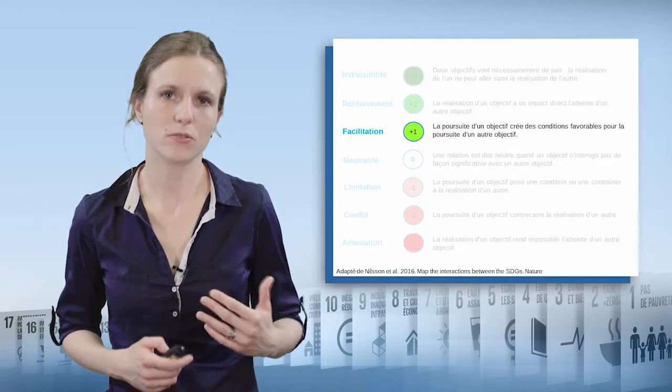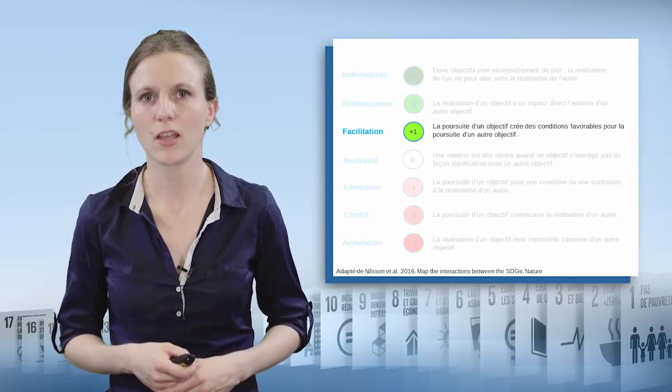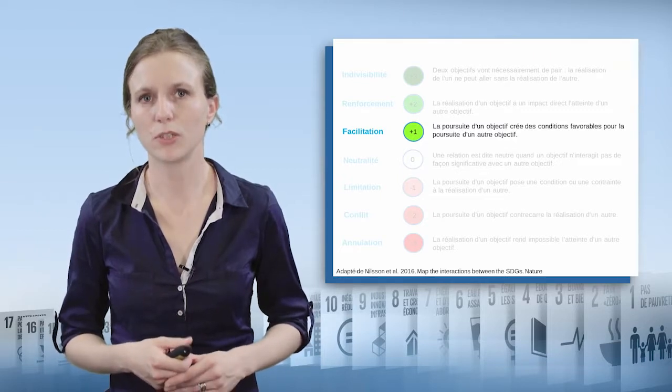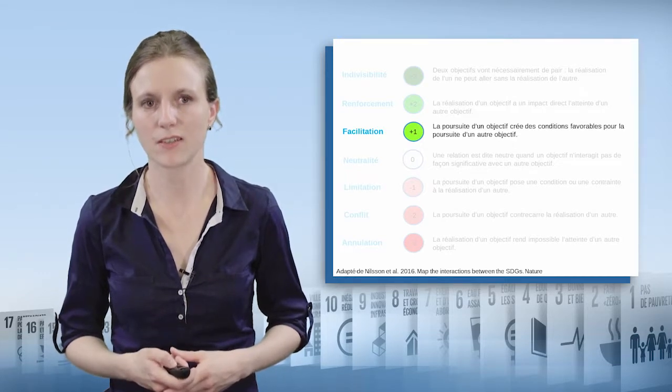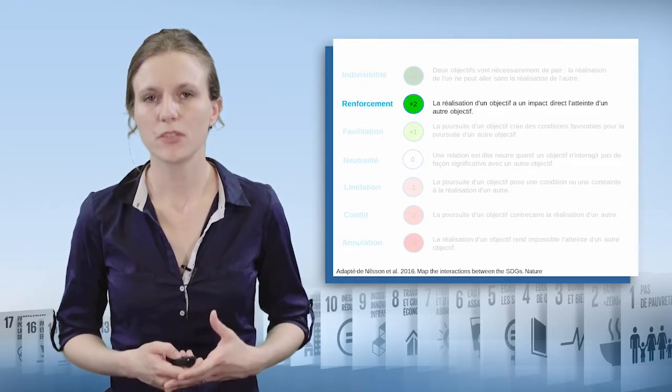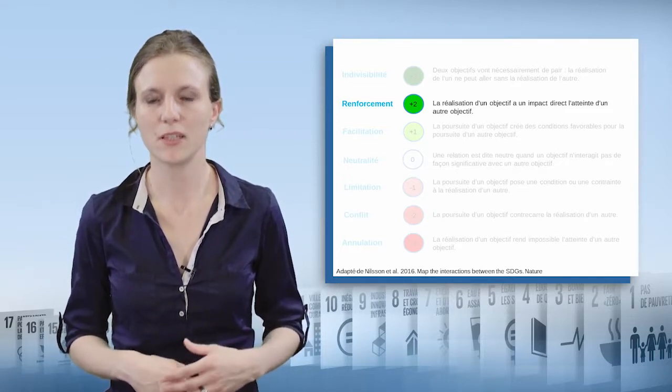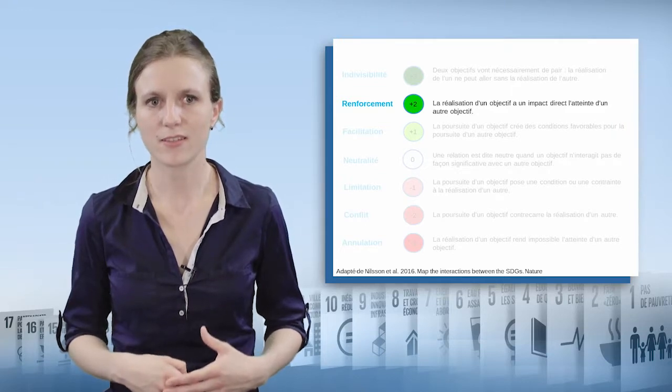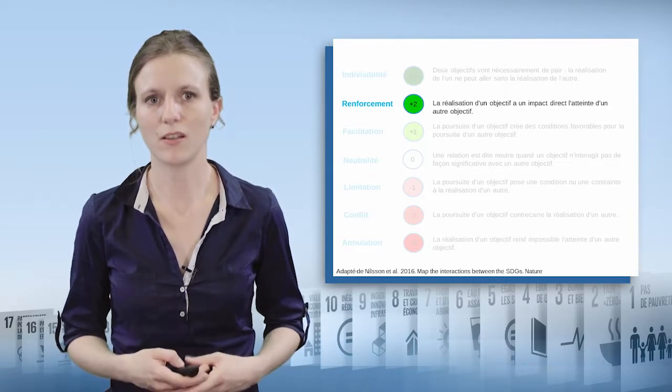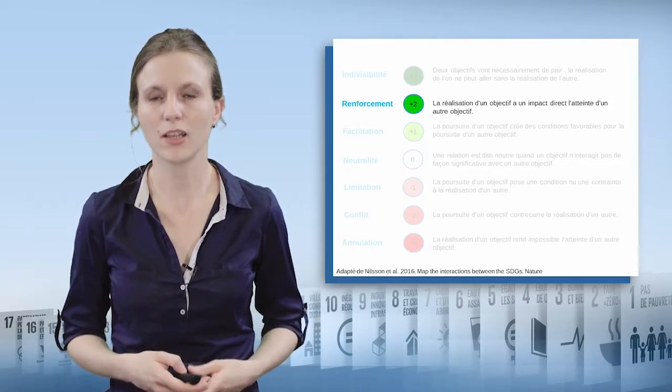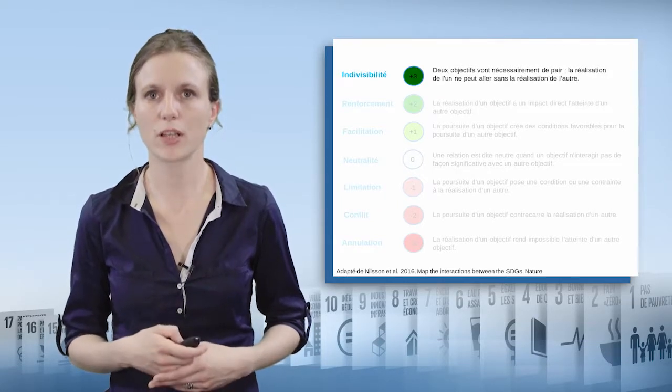With regard to synergies, the first level is that for which pursuing an objective creates favourable conditions for the fulfilment of another goal. For instance, electrifying rural areas pursues the objective of ensuring education for all, because it allows children to do their homework at night with light. We are talking indirect effects. The second level is that of reinforcement. Fulfilling goal A contributes to fulfilling goal B. Here we have a direct and necessary contribution. For instance, developing non-carbonated energies allows to decrease air pollution, thus directly contributing to improved health in the population.